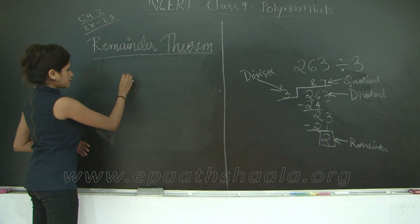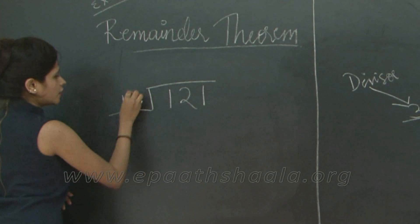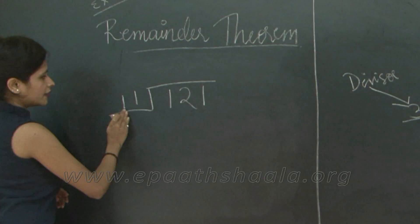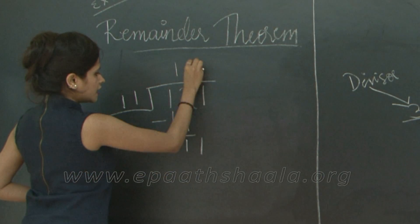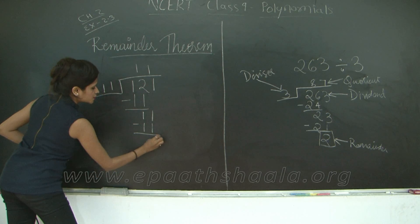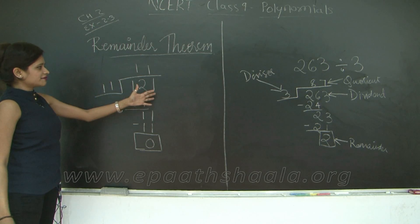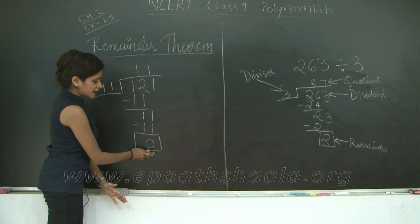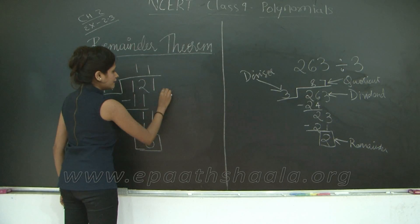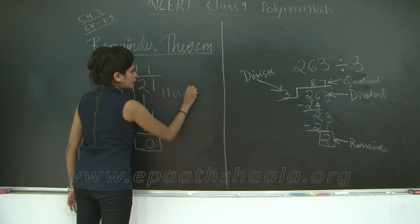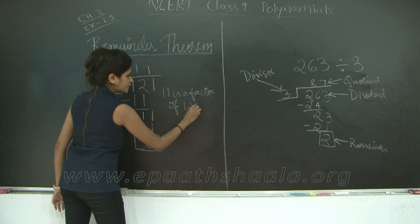In some cases, you won't be left with a remainder. Take for example 121 divided by 11, where 121 is the dividend and 11 is the divisor. 11 ones are 11, 11 ones are 11. The remainder is 0. Whenever a divisor divides the dividend completely giving remainder 0, we say the divisor is a factor of the dividend. So here, 11 is a factor of 121.